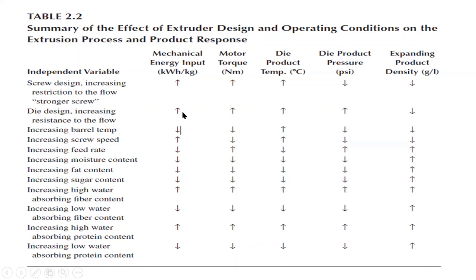For die design: if we increase restrictions or reduce opening, mechanical energy will increase, motor torque will increase, product temperature will increase, and die pressure will increase, while expansion will decrease. For barrel temperature increase: less mechanical energy is required, motor torque is less, temperature increases, die pressure is reduced, and expansion increases. We have seen how screw design, die design, and barrel temperature significantly affect our extrusion process.